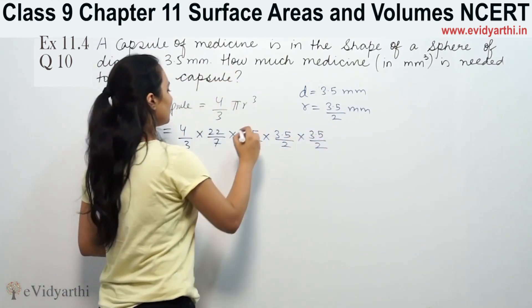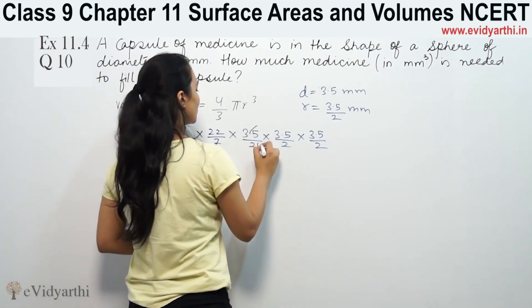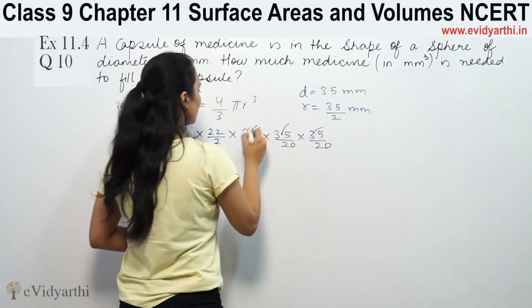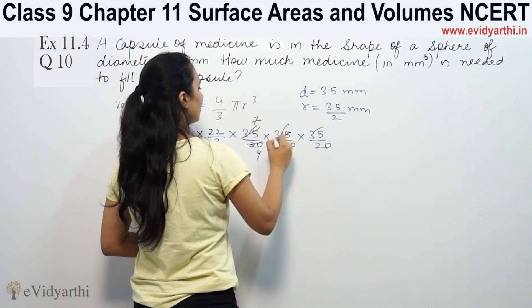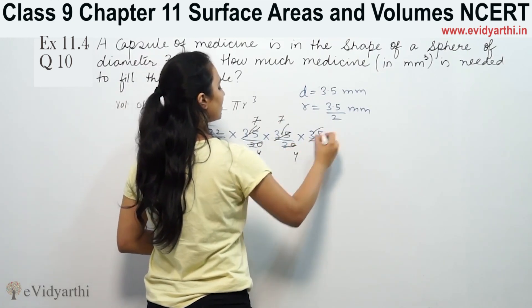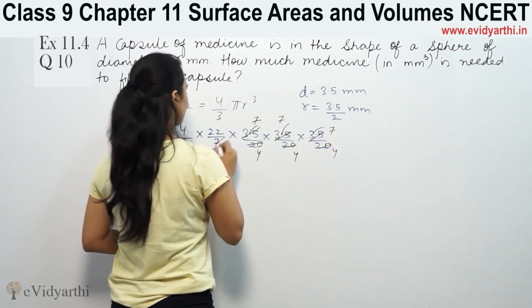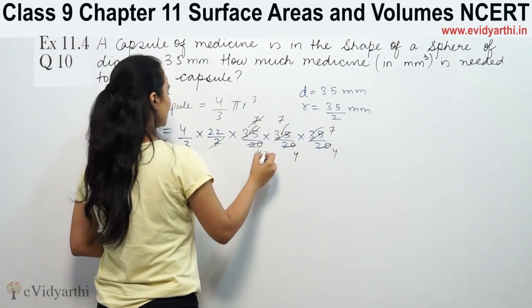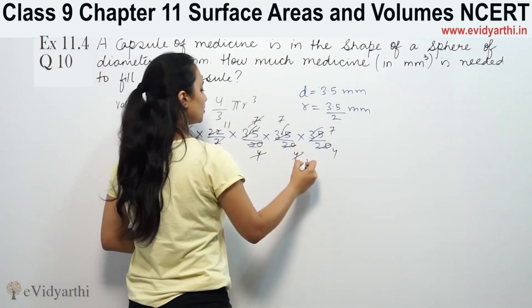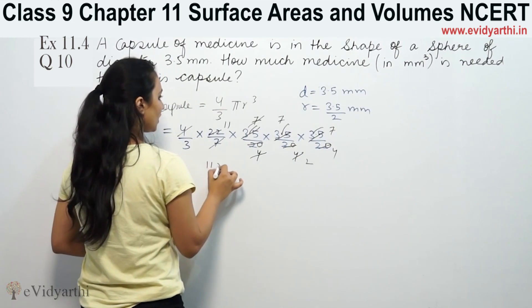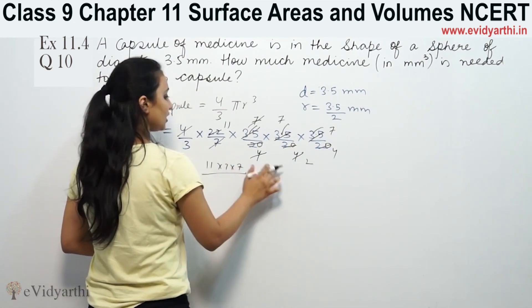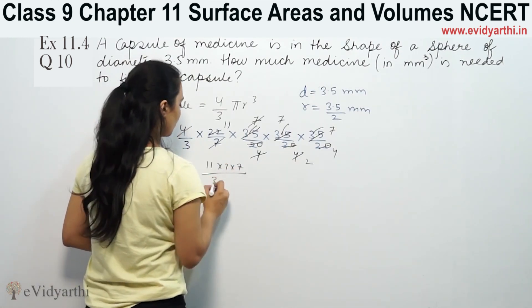So we have to remove the decimals. Multiplying out and cancelling: 7s and 4s cancel, giving us 1 × 7 × 7 × 7 by 3 × 2 × 4.